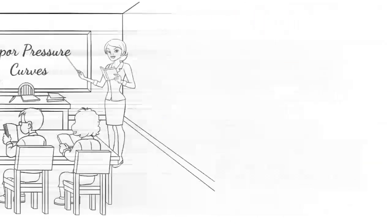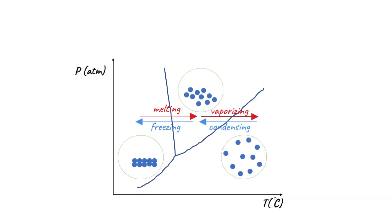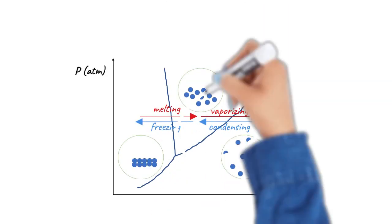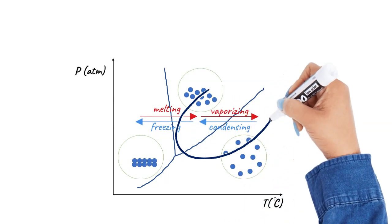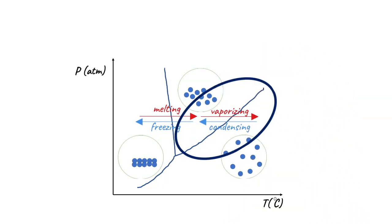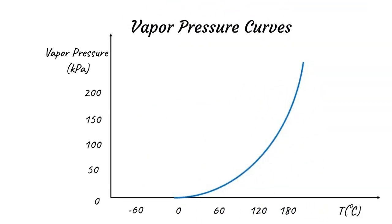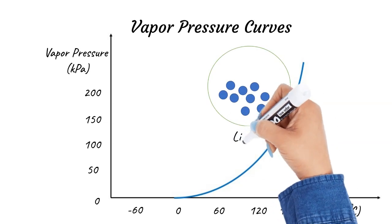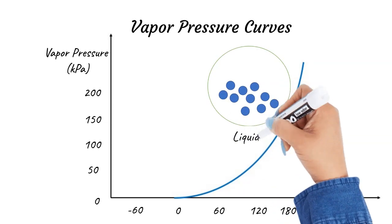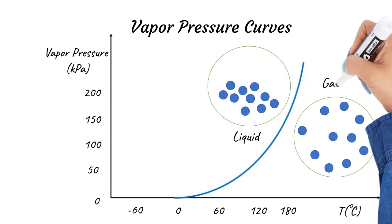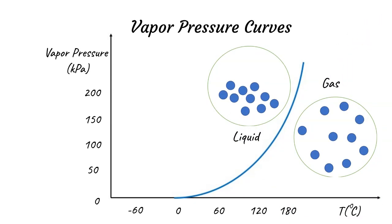The vapor pressure curve is the liquid-gas boundary of the phase diagram. Let's draw this region separately for a hypothetical substance. Above the vapor pressure curve the liquid phase is dominant, while below the curve the gas phase is dominant.